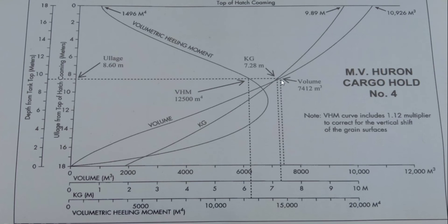From 7,412, you estimate the midpoint and go vertically upward until you touch the volume line. The volume line is touched at this point. Then you take a ruler and go horizontally across to the column showing ullage from top of hatch coaming in meters. You will read an ullage of 8.6 meters. If you also go to the depth of trunk scale, you get approximately 9.4. For now, focusing only on the ullage: that is the relationship — once you have the volume, you touch the line and go horizontally to read the ullage.